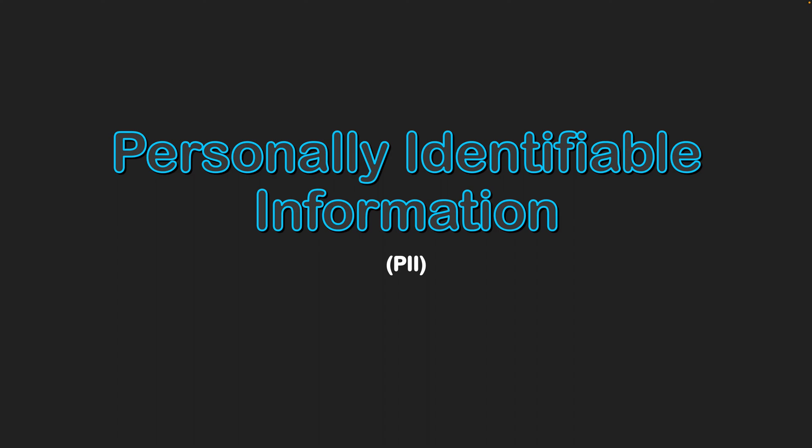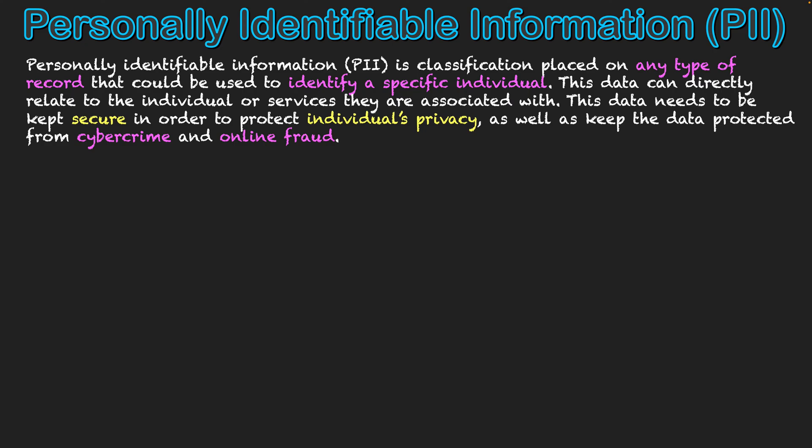Personally Identifiable Information, or PII, is a classification placed on any type of record that could be used to identify a specific individual. This data can directly relate to the individual or services they are associated with. This data needs to be kept secure in order to protect an individual's privacy as well as keep the data protected from cybercrime and online fraud.